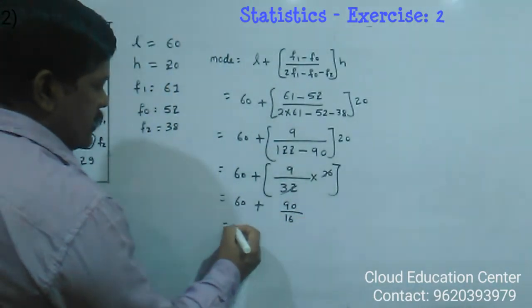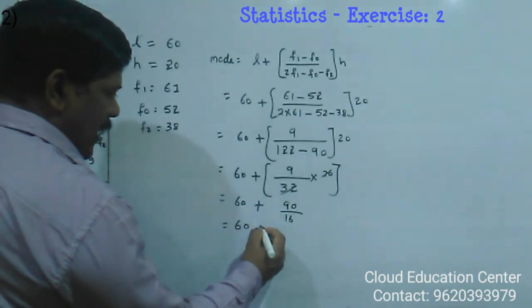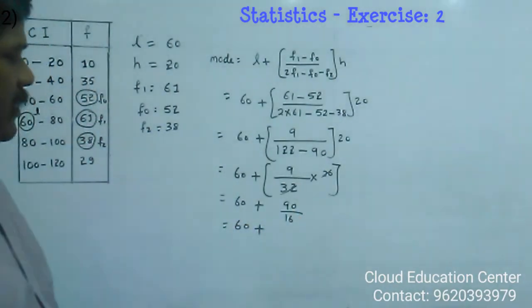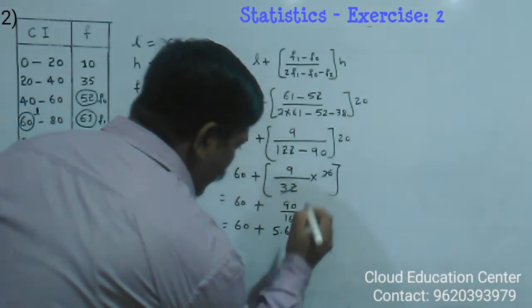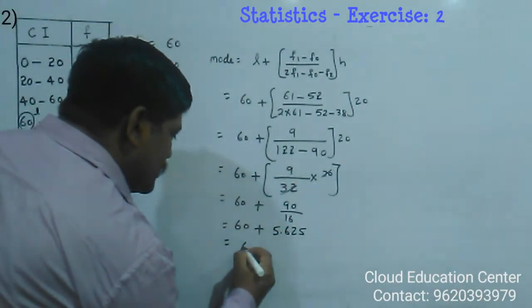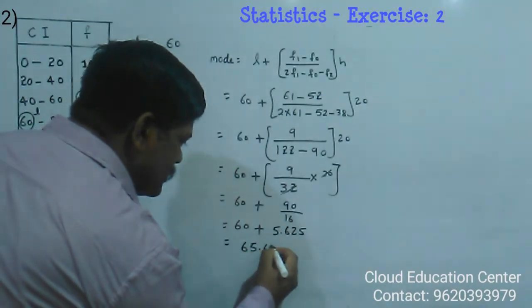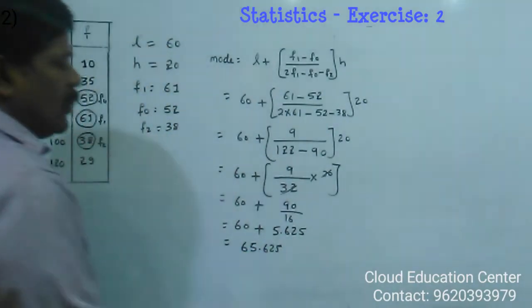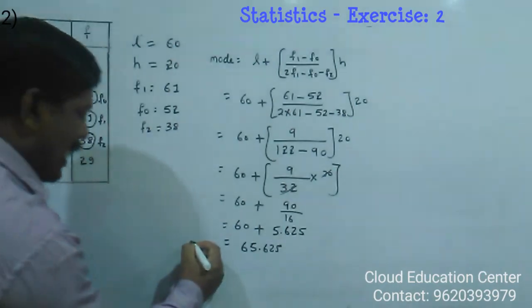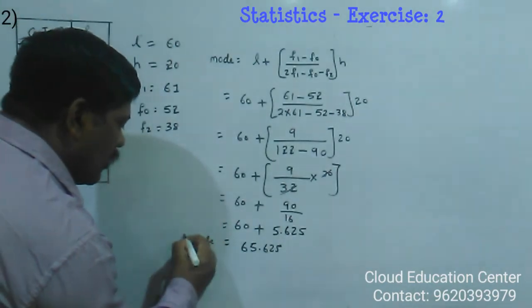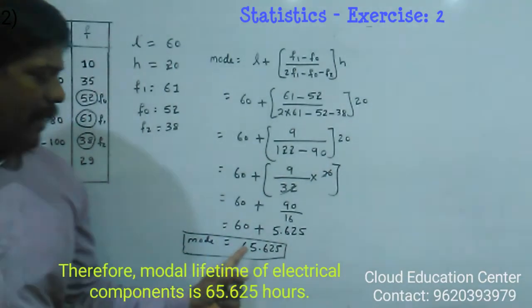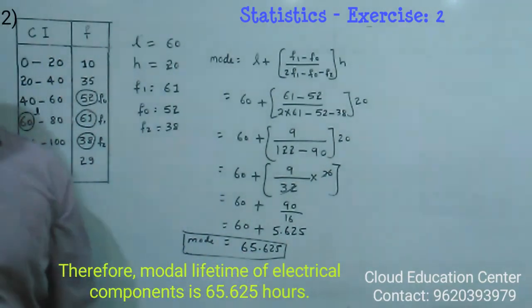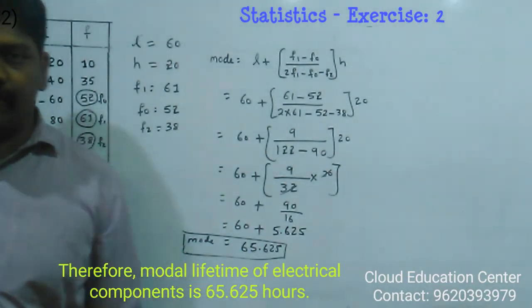This is 60 plus 90 by 16, which is 5.625. Now just add it: 65.625. So the modal lifetime of electrical component is 65.625. That's your answer.